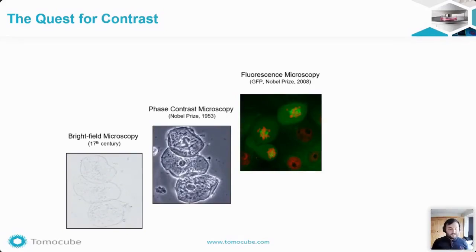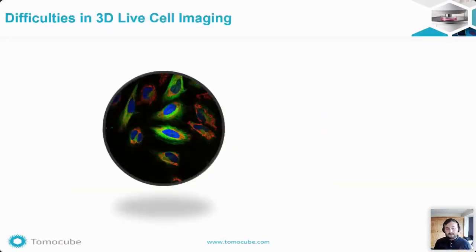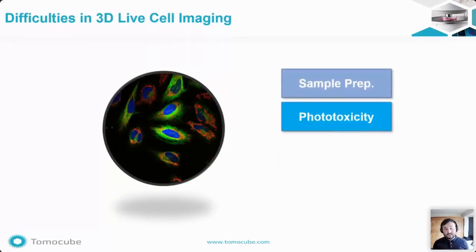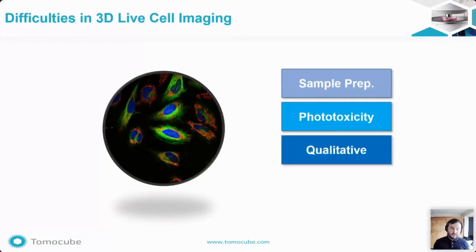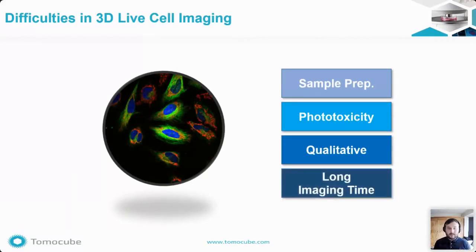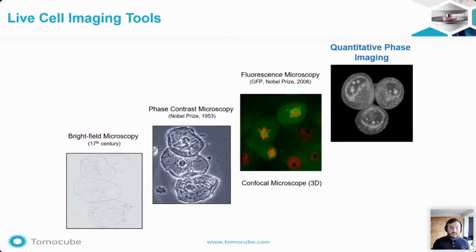However, this came at a cost of accepting the altered physiology of cells, as labels have been added. This is also associated with phototoxicity in live cells. The difficulties regarding 3D cell imaging include complex sample preparation, phototoxicity, the fact that imaging is largely qualitative rather than quantitative, and the time taken for acquisition. Quantitative phase imaging, or QPI, is now an established label-free imaging modality which provides superior contrast without the use of any labels or high illumination radiation to excite fluorophores, while providing this contrast with low phototoxicity. However, most current commercial QPI technologies are limited to 2D imaging.